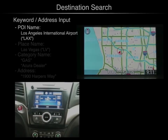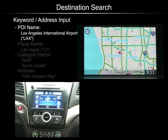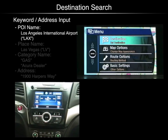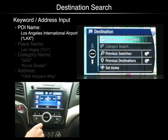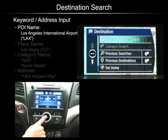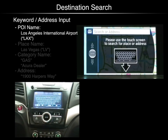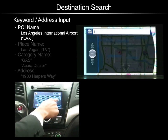There are several ways to search for a destination. First, press the menu button, then push the enter button to select destination. Push enter again to select keyword address input.